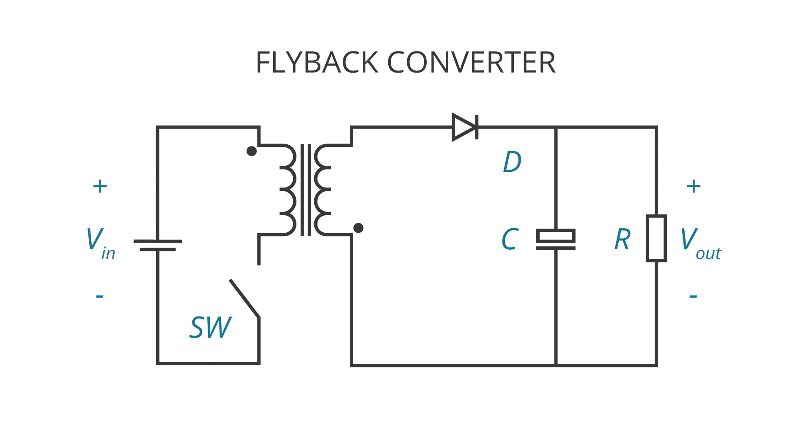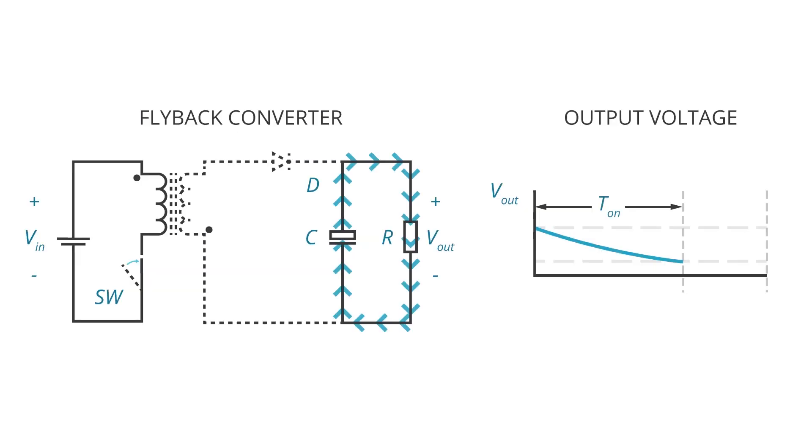As the name implies, there are two components. The ripple is caused by the charging and discharging of storage elements in each switching cycle. For example, in a flyback converter, the load current is supplied entirely by the output capacitors during one half of the cycle.